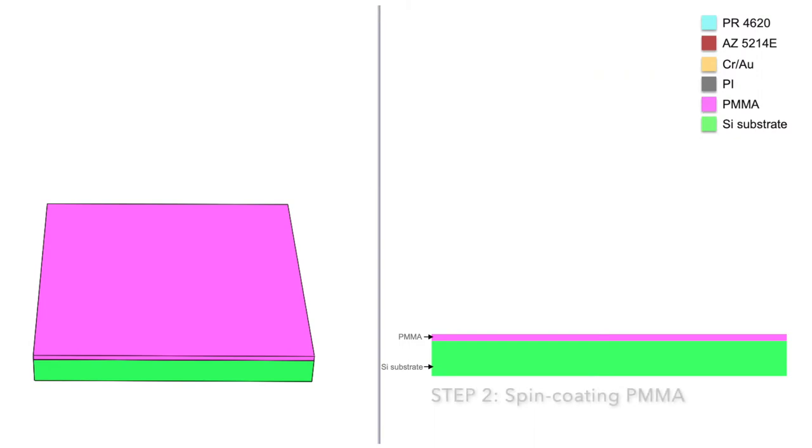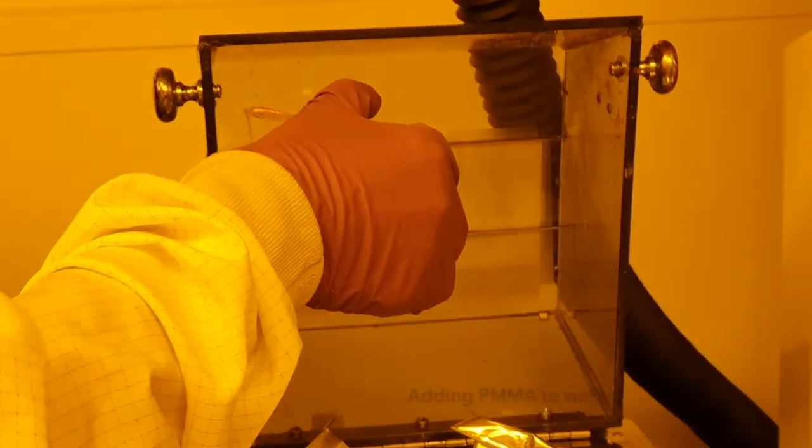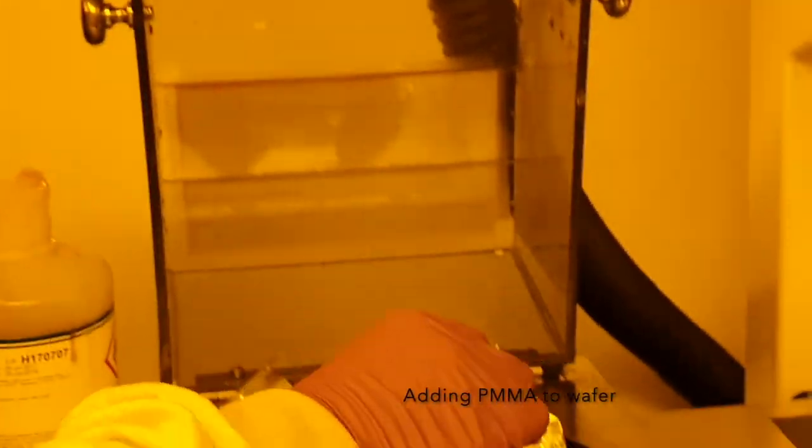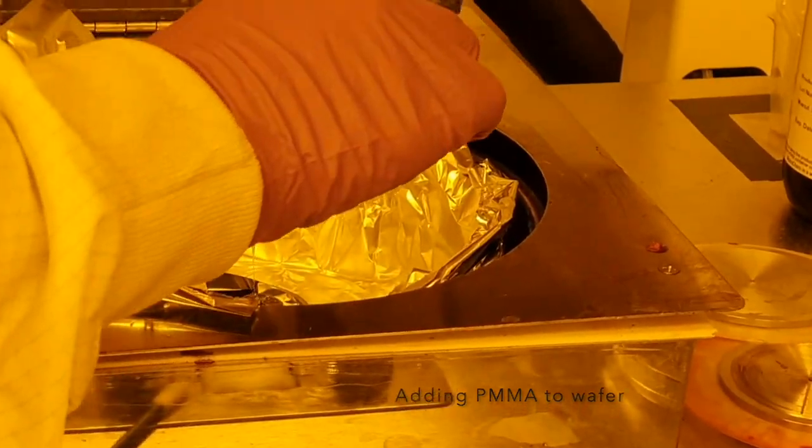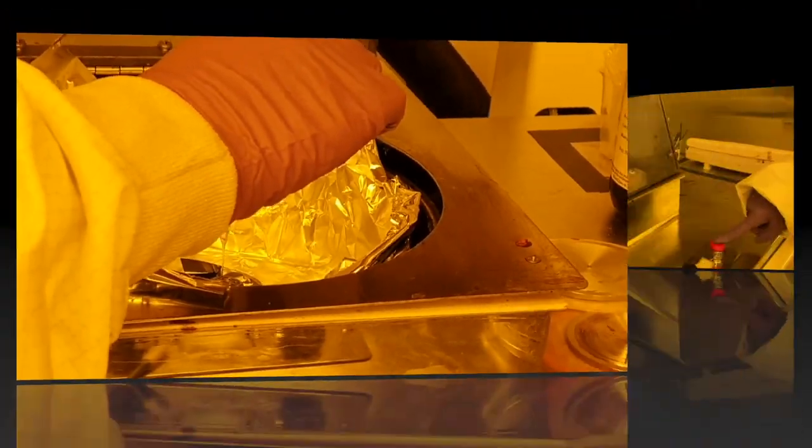Next, we spin coat a layer of PMMA as a sacrificial layer which will be used to release our device from the rigid silicon substrate once the sensor is ready. We place the sample in the spin coater and use a sequence of variable spin speeds in order to achieve a uniform thickness.